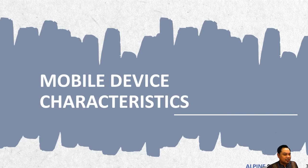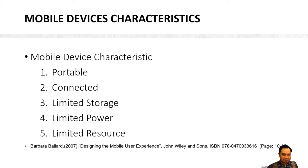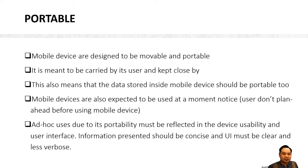First we look into mobile device characteristics. There are five mobile device characteristics that you need to understand: portable, connected, limited storage, limited power, and limited resource.